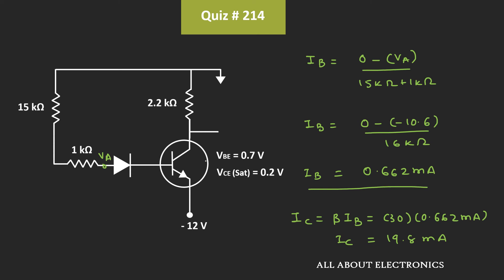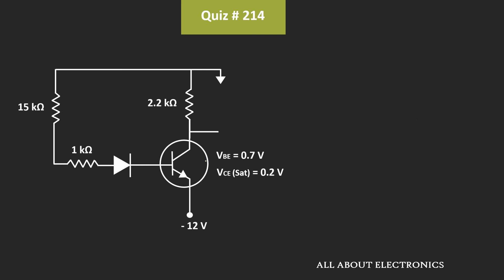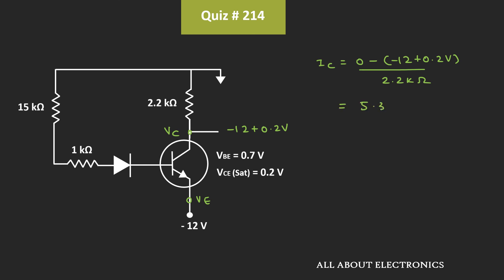But first of all, let's check whether this much collector current can flow through this given transistor. For that, let's find out the maximum collector current which can flow through this transistor circuit. We will assume that the transistor is operating in the saturation region, meaning VCEsat is equal to 0.2V. The voltage at the emitter terminal is equal to minus 12V. So if the transistor is operating in the saturation region, then the collector voltage Vc will be equal to minus 12V plus 0.2V, and the collector current Ic will be equal to (0 − (−12 + 0.2V)) / 2.2kΩ, which is equal to 5.36mA.